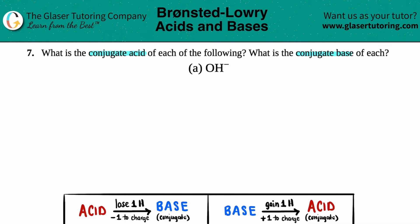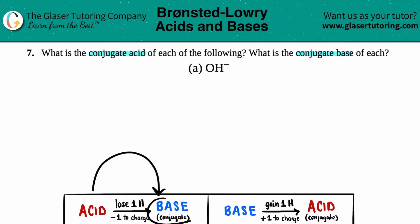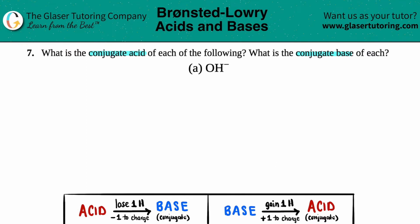If you can find both the conjugate acid and the conjugate base of a single molecule or ion, that means it is amphoteric — it can act as either an acid or a base. If it's acting as an acid you can find the conjugate base, and if it's acting as a base you can find the conjugate acid. So let's just divide this up with a line.